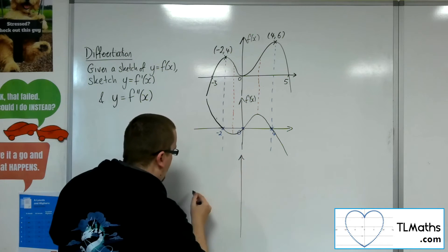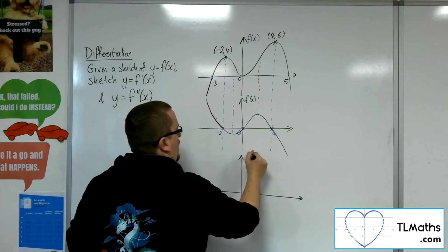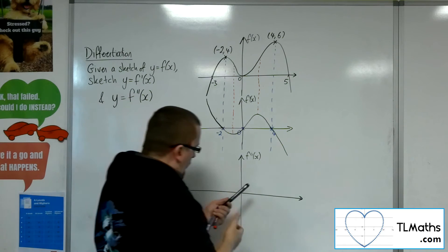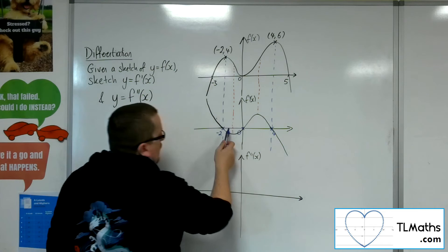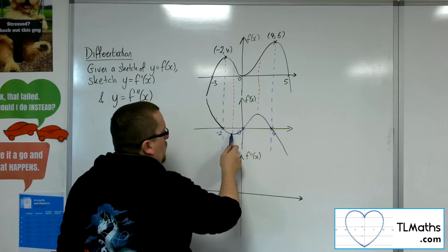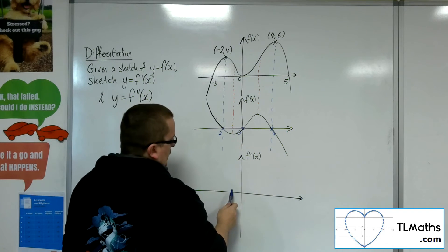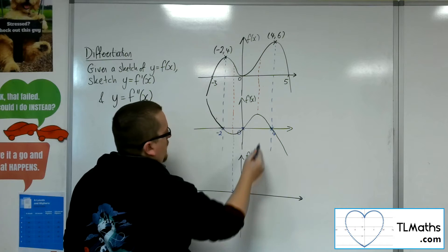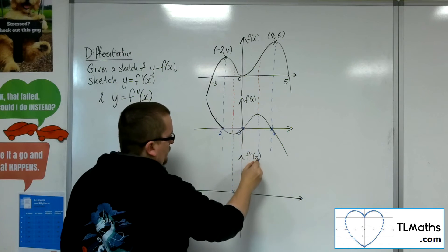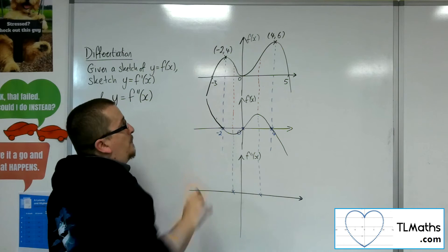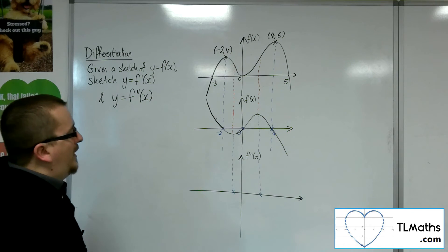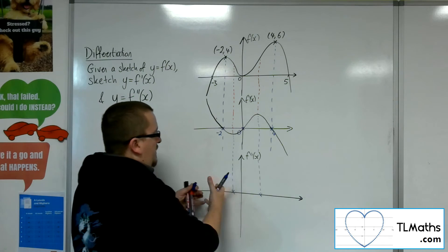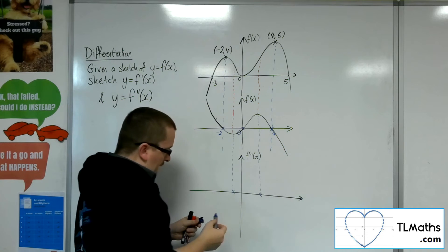So f double prime. Gradient function of that. Well, where this curve is stationary will be where this curve is crossing through its x-axis. So that point there, and that point there. Now we didn't have that bit of information on the original curve as to what those actual points were. But that's telling us where the second derivative, this gradient function of the gradient function, is crossing through the x-axis.